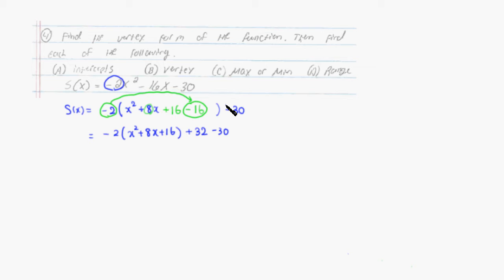Then we can just clean it up. So negative 2 is still there, just a factor. x squared plus 8x plus 16 is going to be x plus 8 divided by 2, so it's 4, then squared. So we could complete the square. 32 minus 30 would be positive 2. So this is the vertex form.